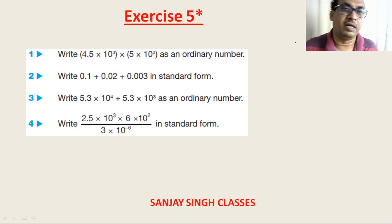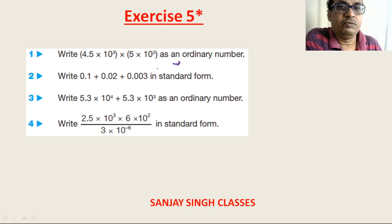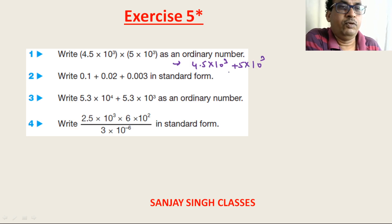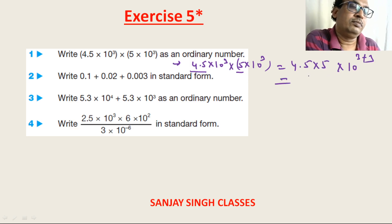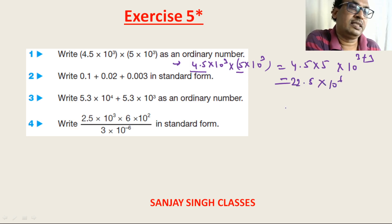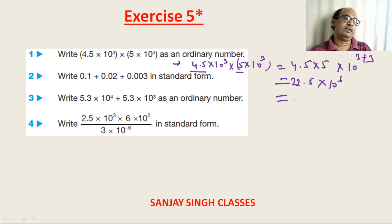Now moving to exercise 5 star — similar problems but with a bit more calculation. Question 1: (4.5 × 10³) × (5 × 10³). We multiply 4.5 × 5 = 22.5 and apply the law of indices for powers: 10^(3+3) = 10⁶, giving 22.5 × 10⁶ which in standard form is 2.25 × 10⁷.